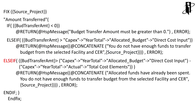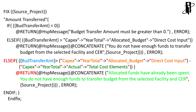The last criteria is if the budget transfer amount in allocated budget has already been spent — that's where we do our comparison and subtraction against actuals to make sure we have enough funds to transfer. We then return the error message: 'Allocated funds have already been spent. You don't have enough funds to transfer the budget for this particular CER.' That's under the covers in Calculation Manager using the @RETURN function.